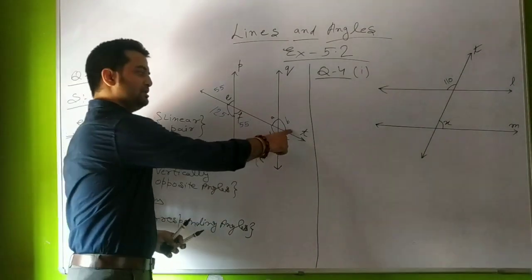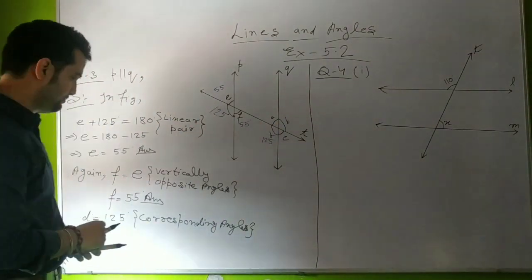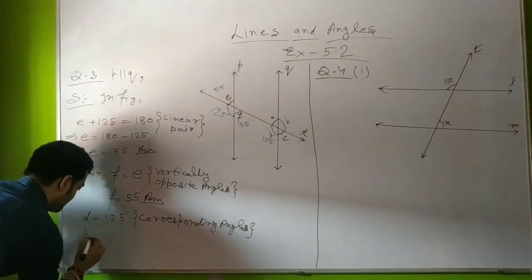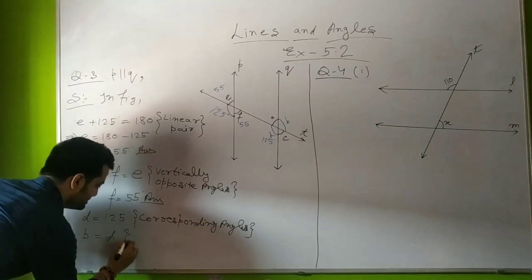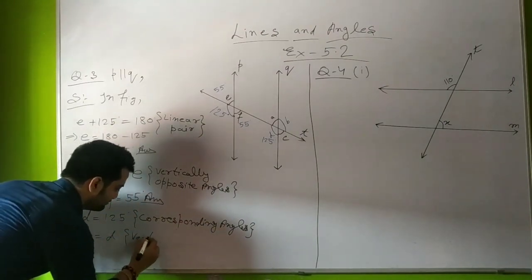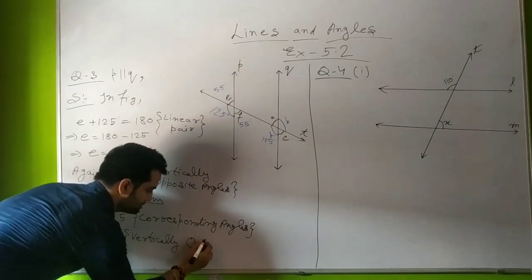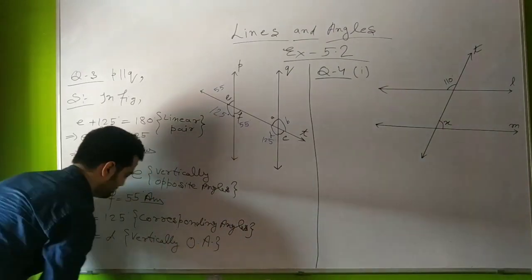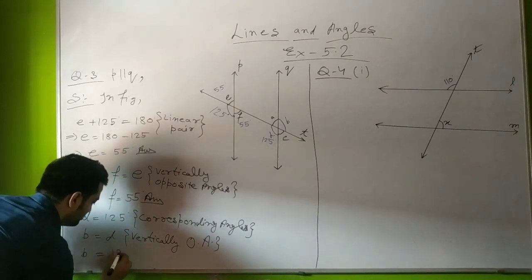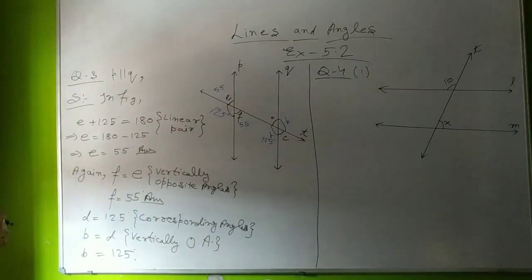We have the values so far: angle E = 55°, angle F = 55°, and angle D = 125°. Now if you look at angle B, it is the vertically opposite angle of D. So B = D by the vertically opposite angles property, giving angle B = 125 degrees.